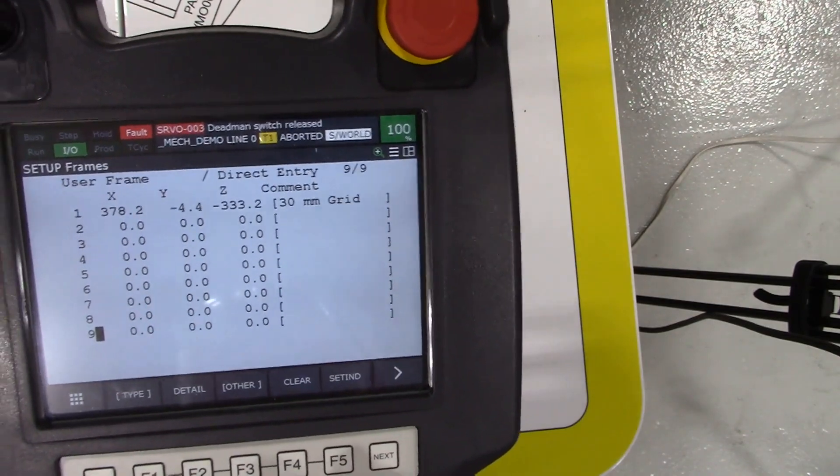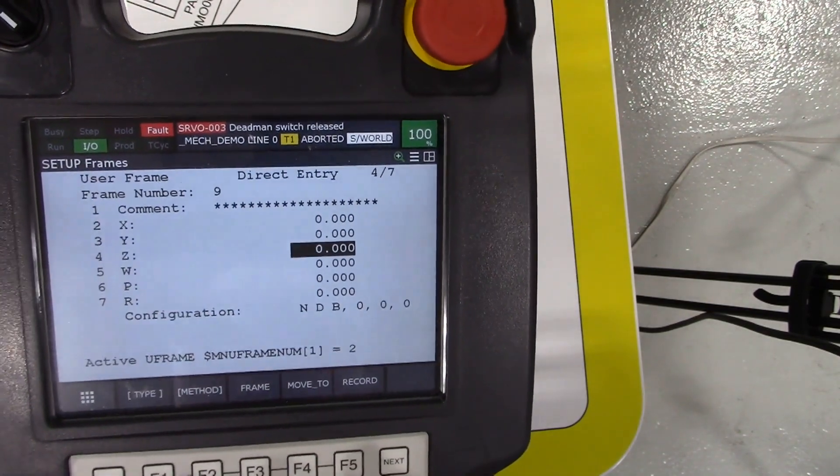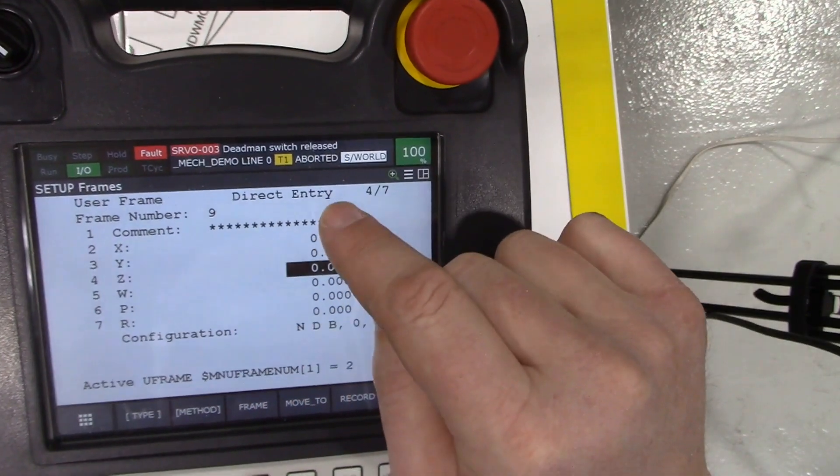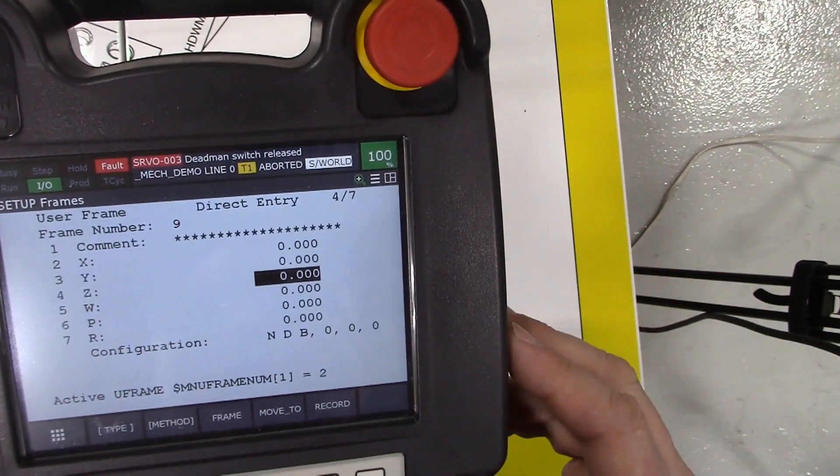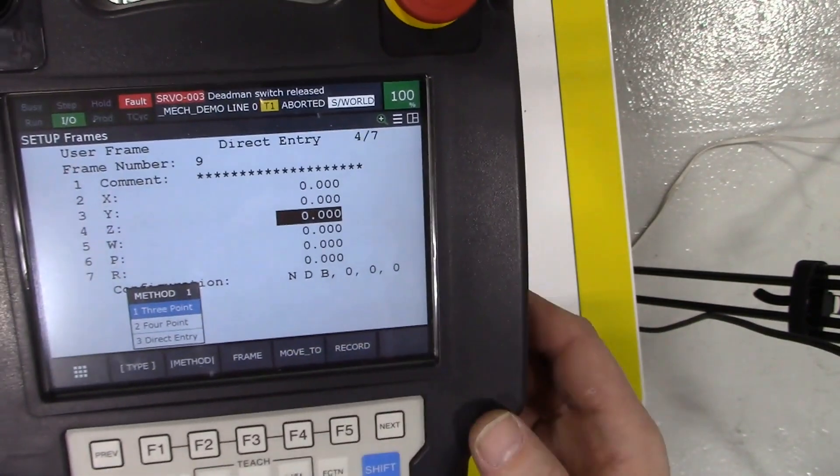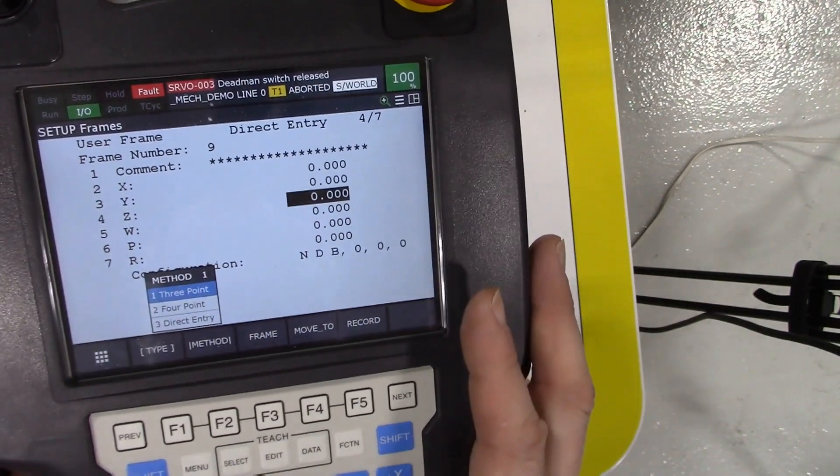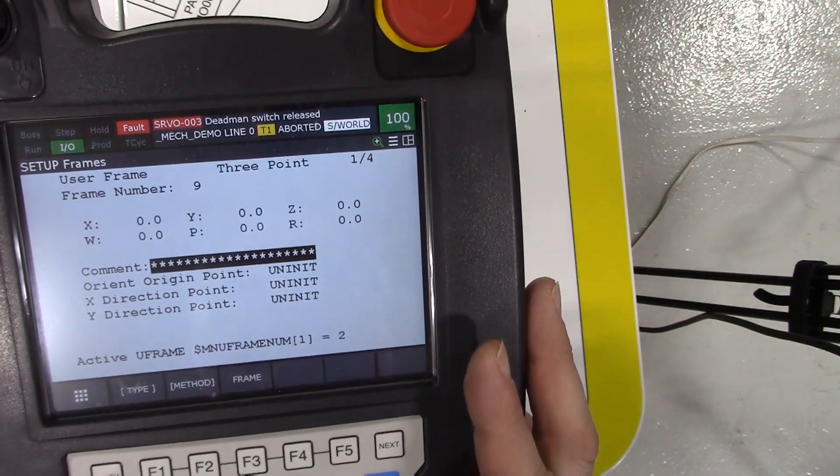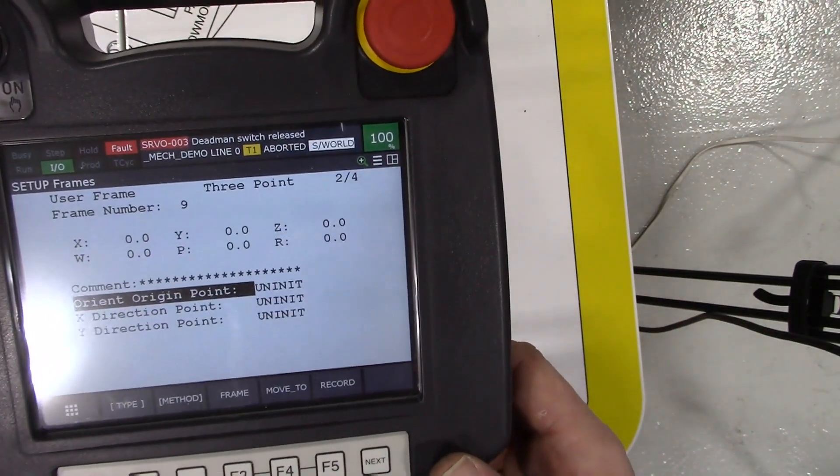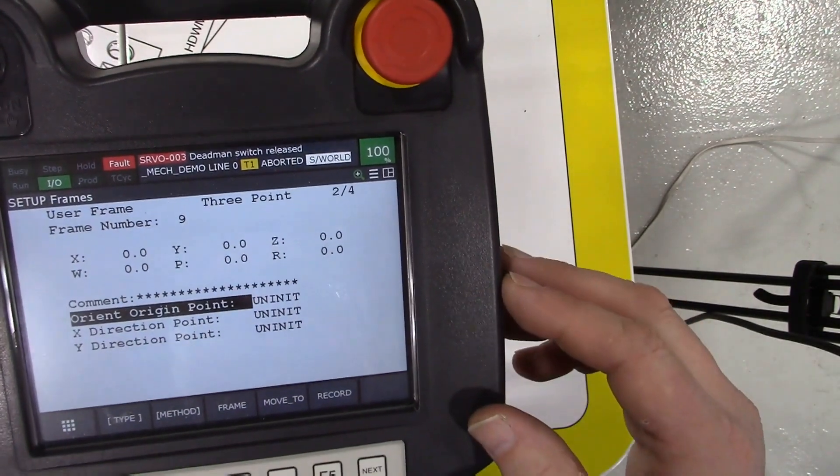We're going to go down to user frame number nine and reconfigure this. All right, so I'm going to hit enter and here's user frame number nine and we're going to change the method to a three-point method to configure this. So three-point method and we can add comments or not. I'm going to skip that section just to make it a little bit easier.